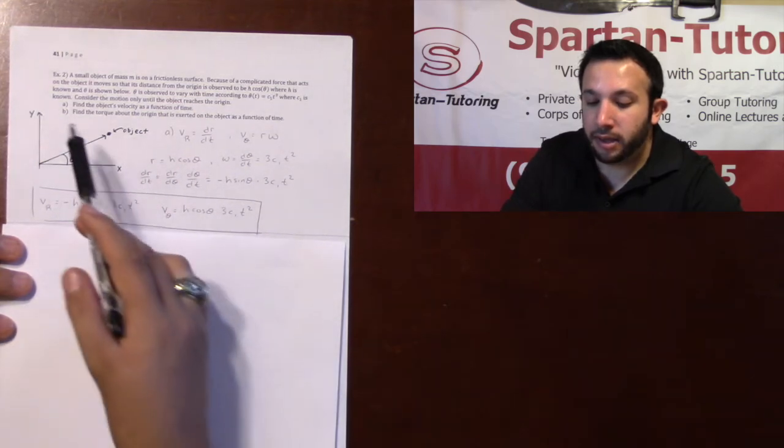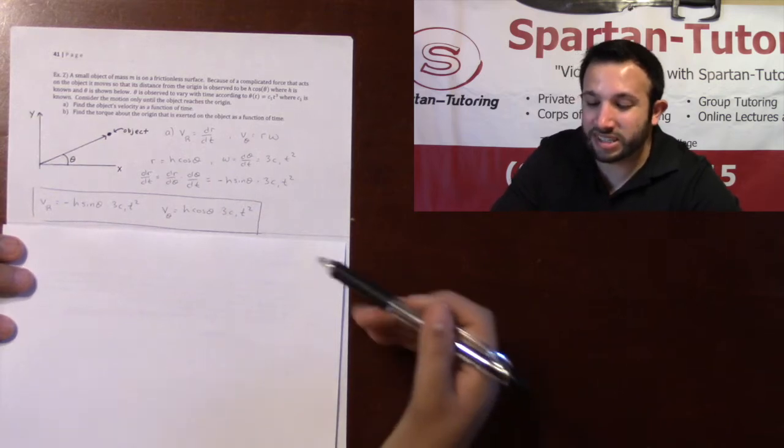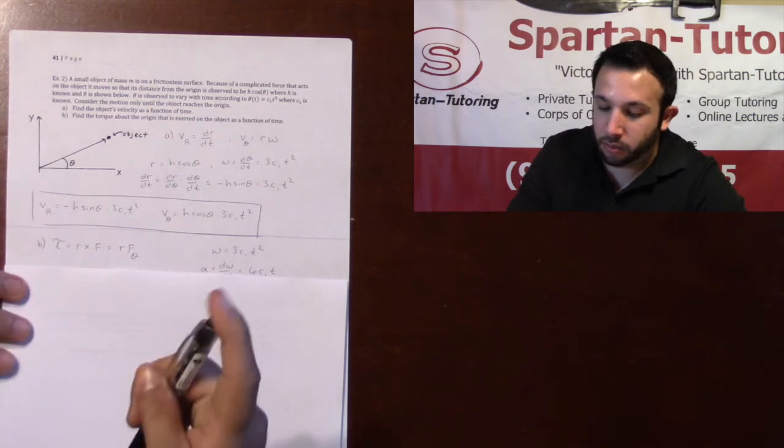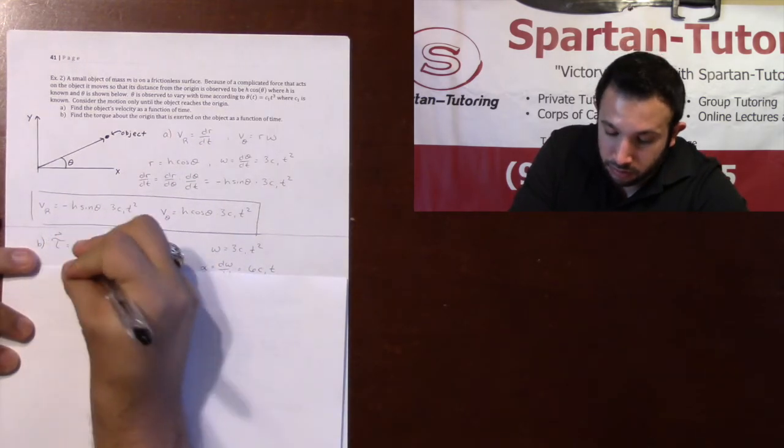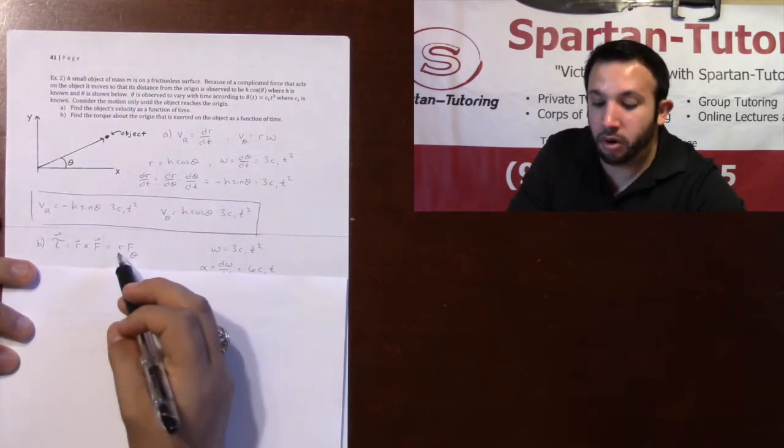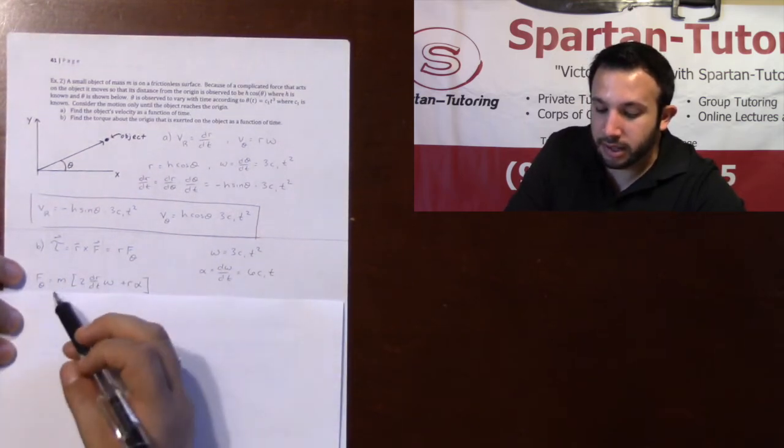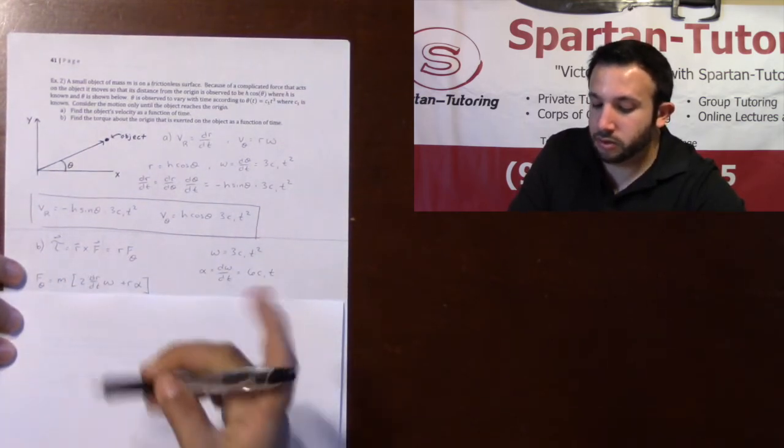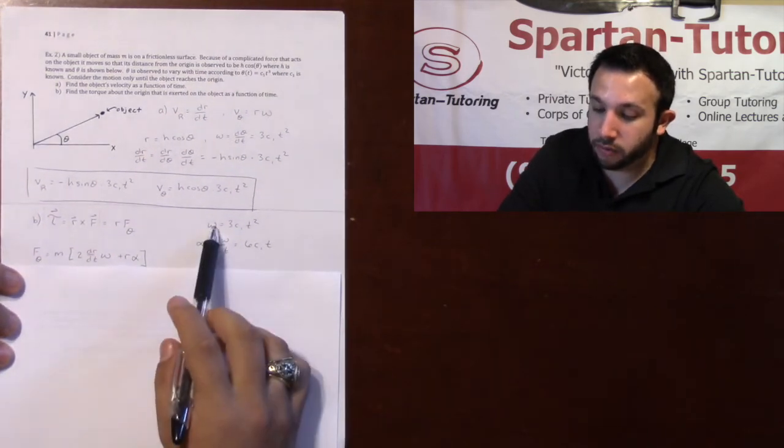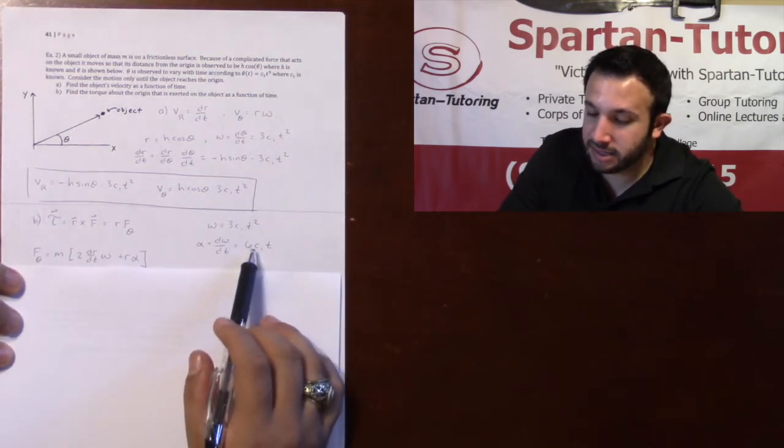So now that I have that for part A, for part B, it says find the torque about the origin that is exerted on the object as a function of time. Now we already saw that torque is r crossed with f. And the magnitude of your torque is always going to be r times f theta. And so f theta is going to be your m times your 2 times dr/dt omega plus r alpha. Omega we've already got, 3c₁t². Alpha, the derivative of that, is 6c₁t.